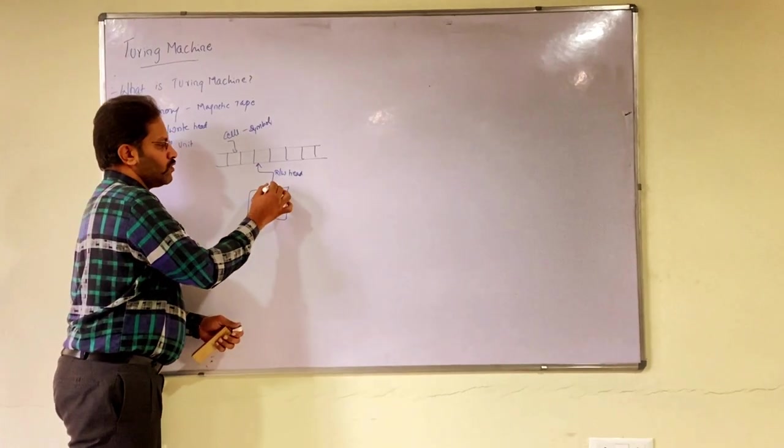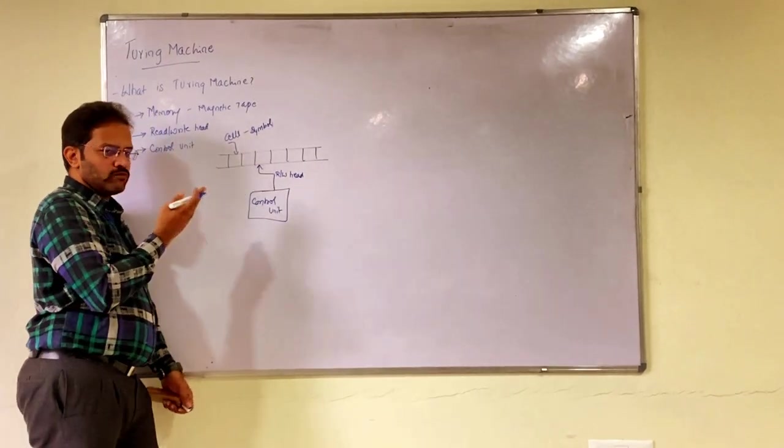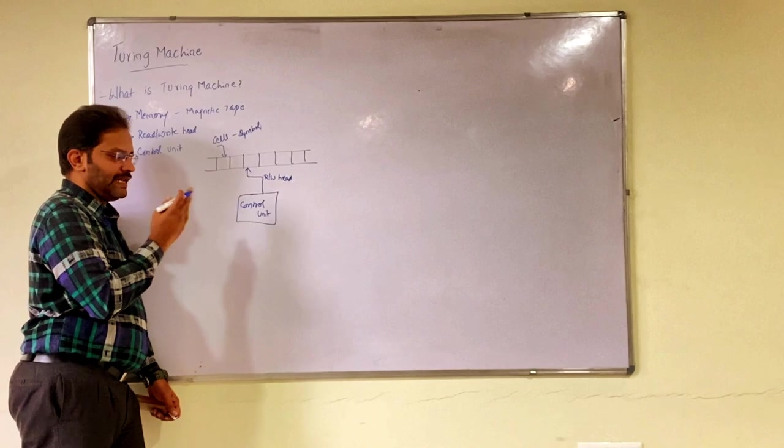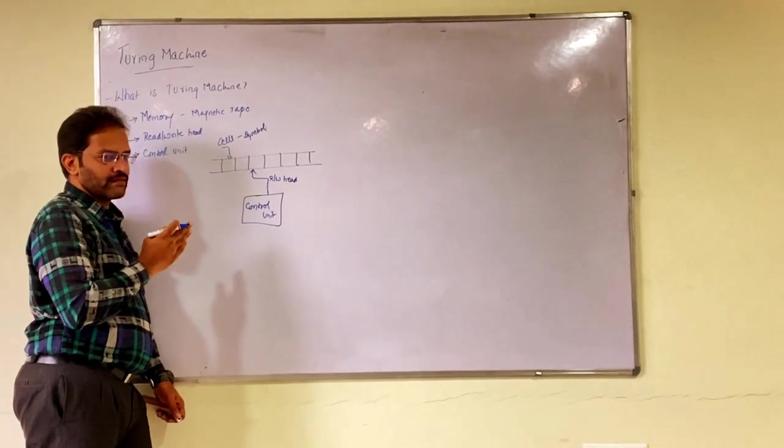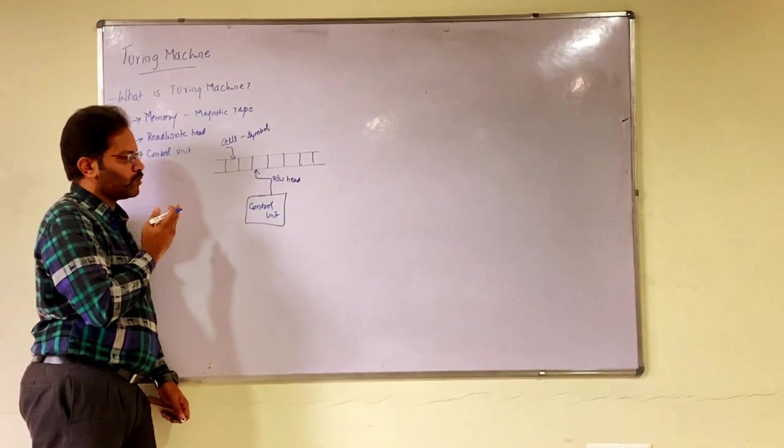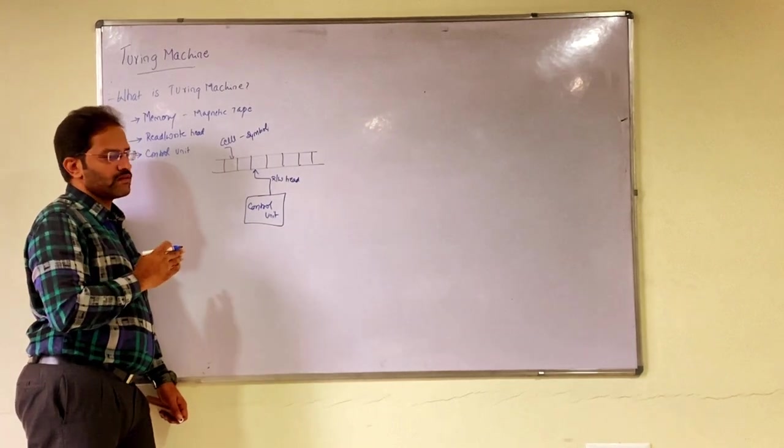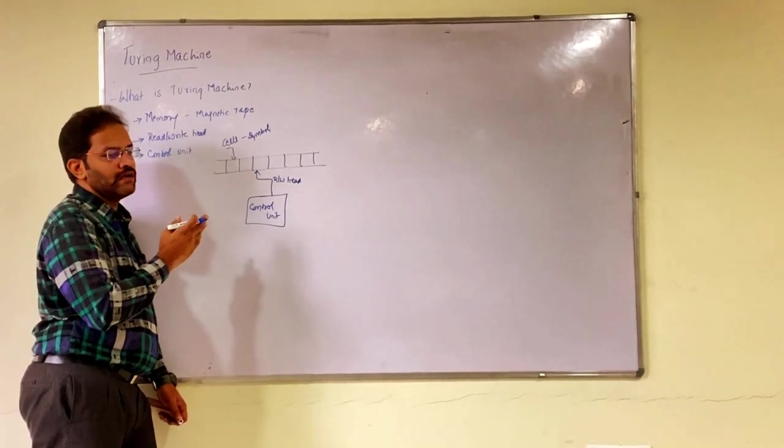There is a read-write head which is pointing to a particular cell which either moves towards left or right. At any point of time it will be pointing to one single cell. The moment if we say left it moves one cell towards left, or if it is right it moves one cell towards right.